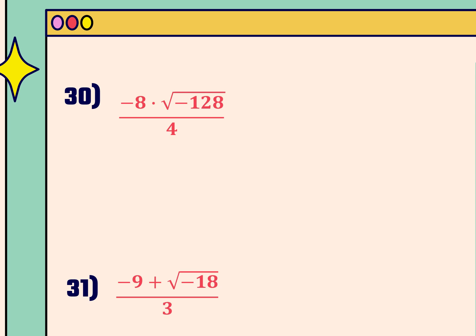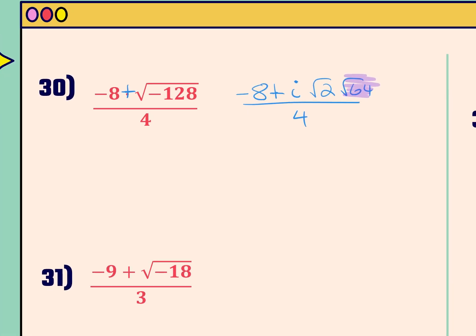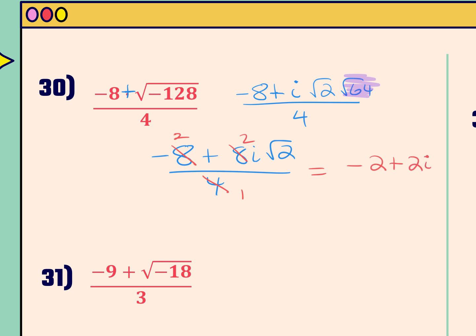For number 30, I'm going to break down the negative 128. The negative 8 is already out front. I'll pull an i out of the 128 and break it into 2 times 64. Let's make it negative 8 plus the square root of negative 128. I can simplify the square root of 64, which comes out as 8. So now I have negative 8 plus 8i square root 2, all over 4. Dividing all terms by 4 gives the final answer: negative 2 plus 2i square root 2.